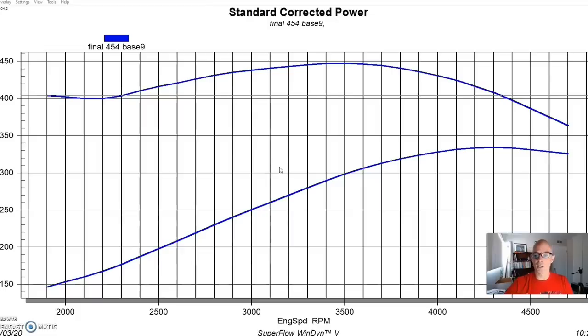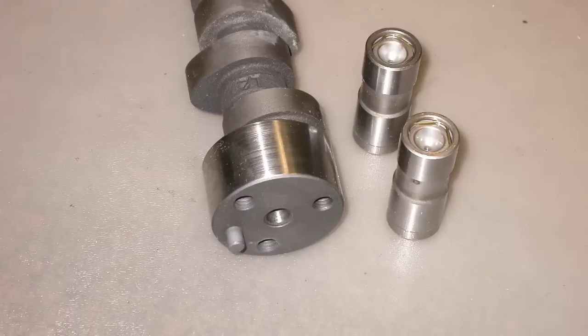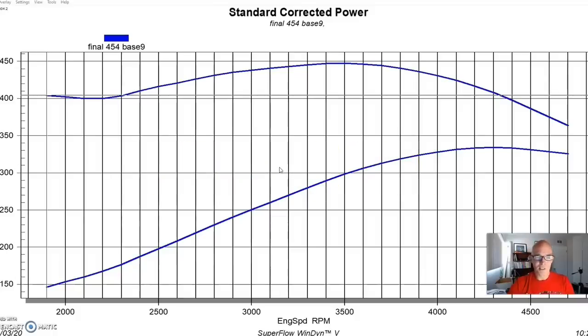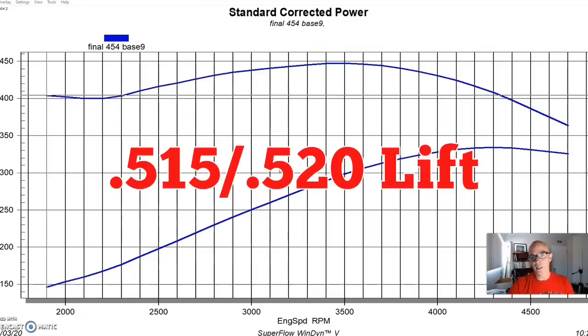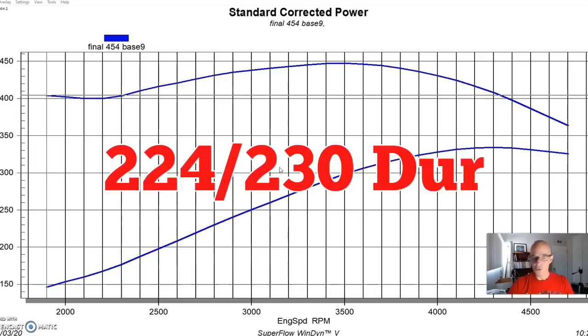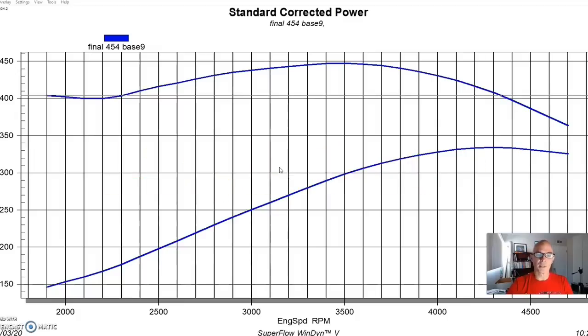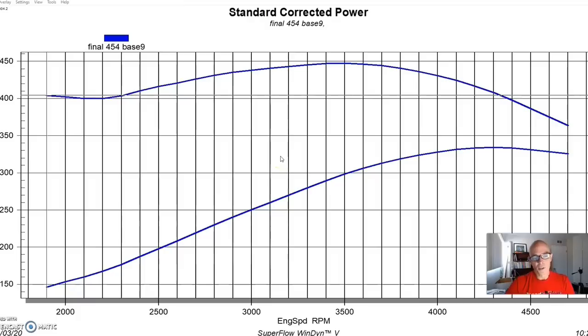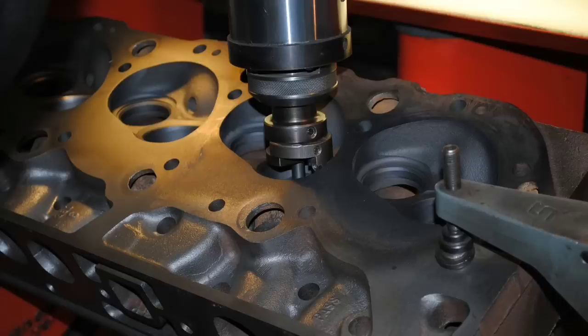We chose our camshaft accordingly. It was still a flat tappet cam. It was from Comp Cams, an Extreme Energy 268. For a big block it was still a fairly mild cam. It was a 515-520 lift split, 224-230 degree duration split, and 110 degree lobe separation angle. As I said, a performance cam but still fairly mild for big block standards, especially on the lift side.